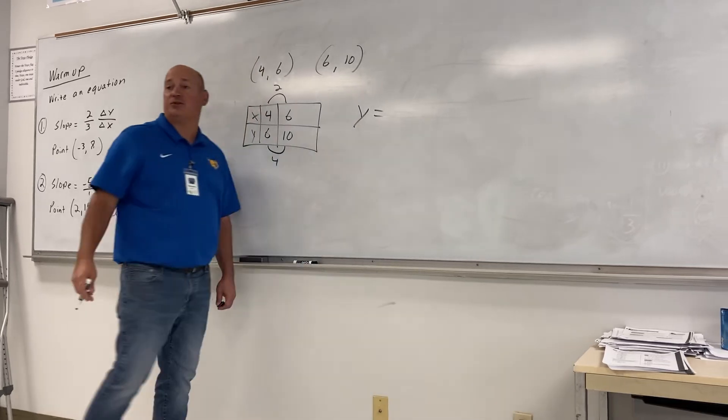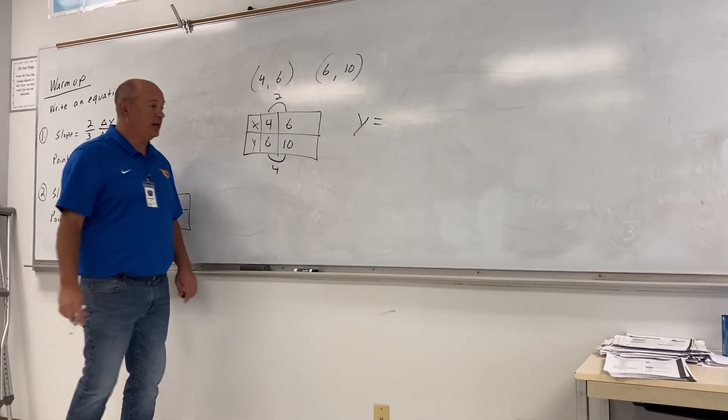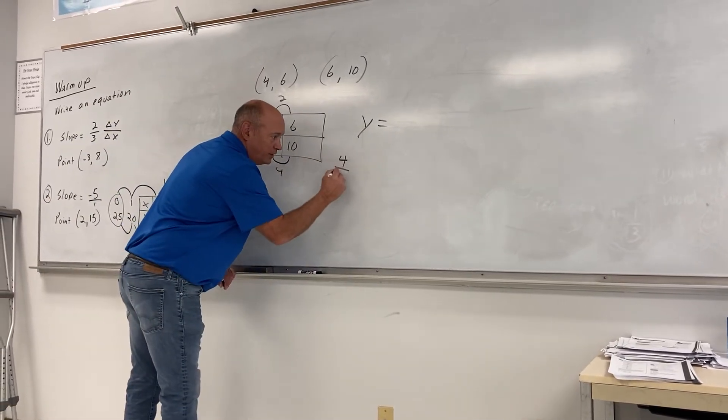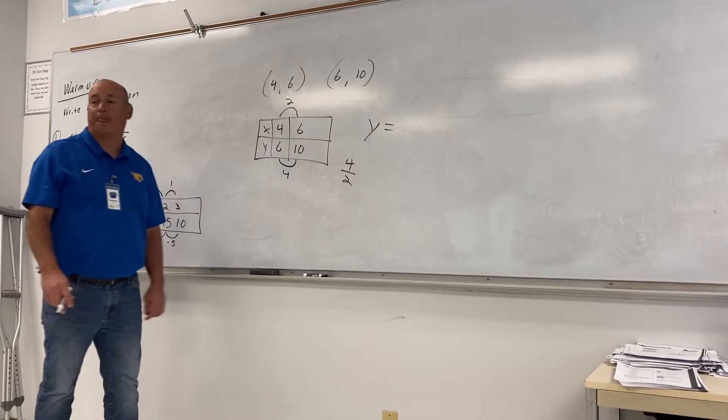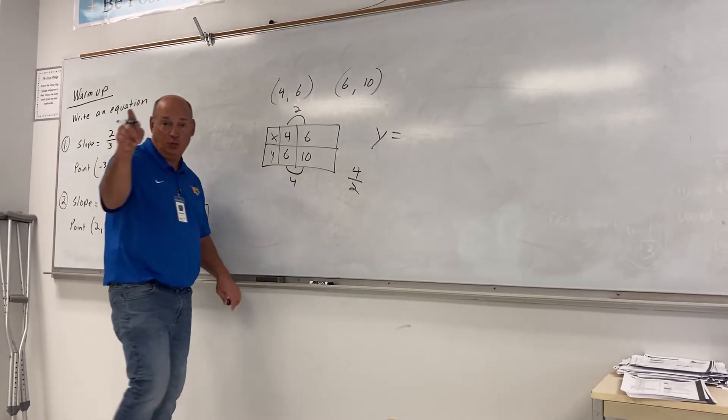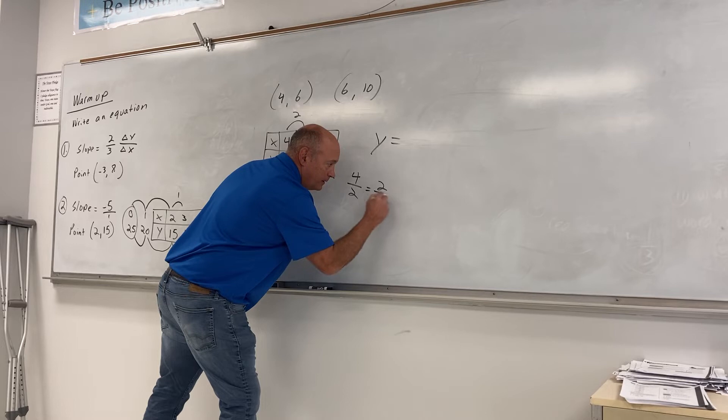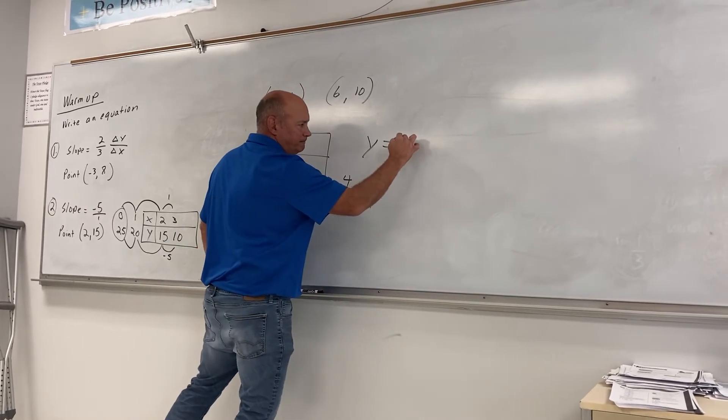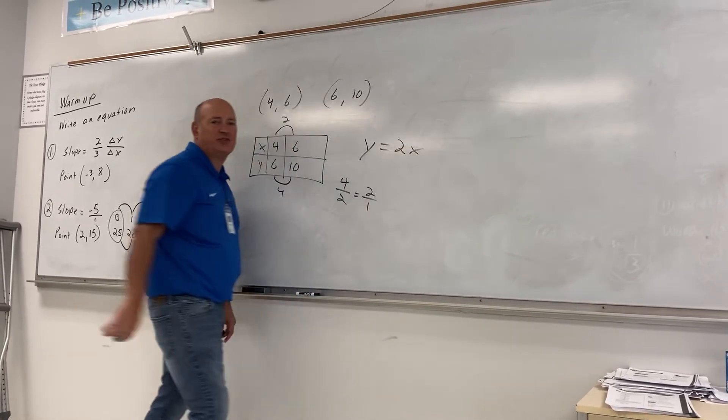Four. Let's reduce four over two. One over two. Try again. Two. Four over two does not reduce to one half. Two over one. So, my slope is what? Two over one X or just two X?